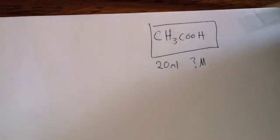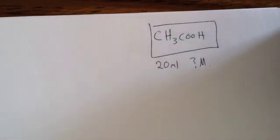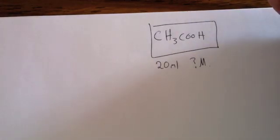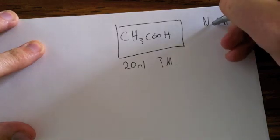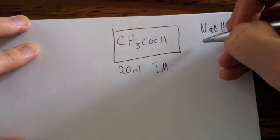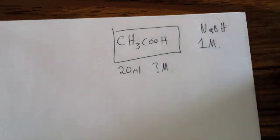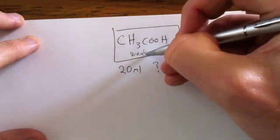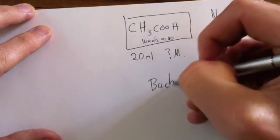So here's a problem where we have 20 mLs of an unknown concentration of ethanoic acid or acetic acid. Now, to do this, normally you would titrate with a base, so say with NaOH. You might have a base of a known concentration, so you might have one molar NaOH and you titrate with that until you get your end point. But because ethanoic acid is a weak acid, you need to do your back titration.